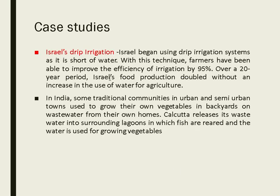Case study: Israel's drip irrigation. Israel is a very arid country where crop cultivation was difficult. By using drip irrigation, they improved irrigation efficiency by 95%, and during this period food production doubled without an increase in water use.